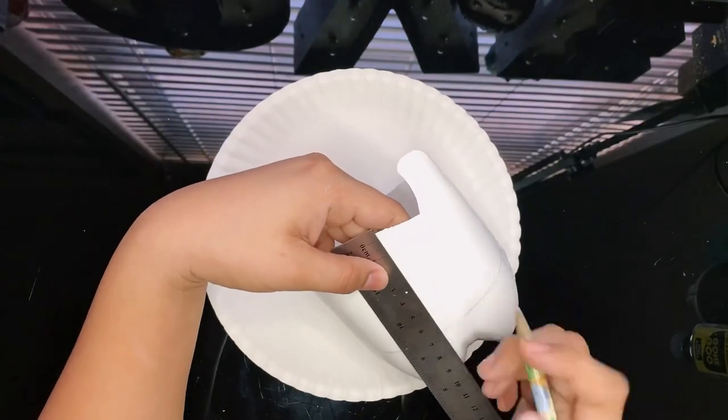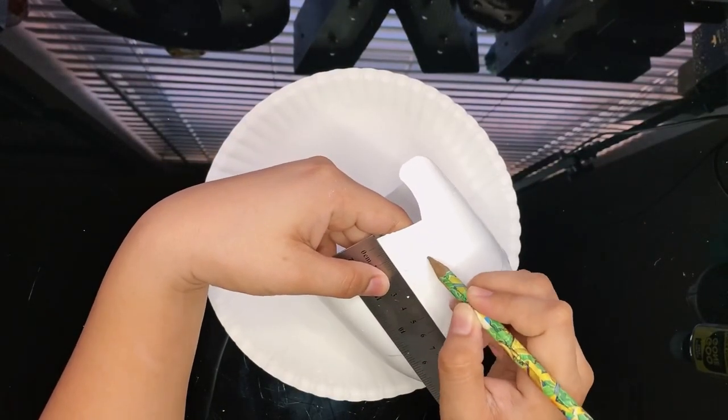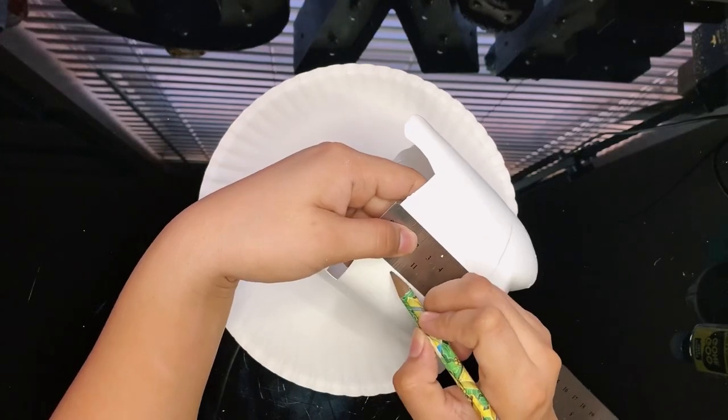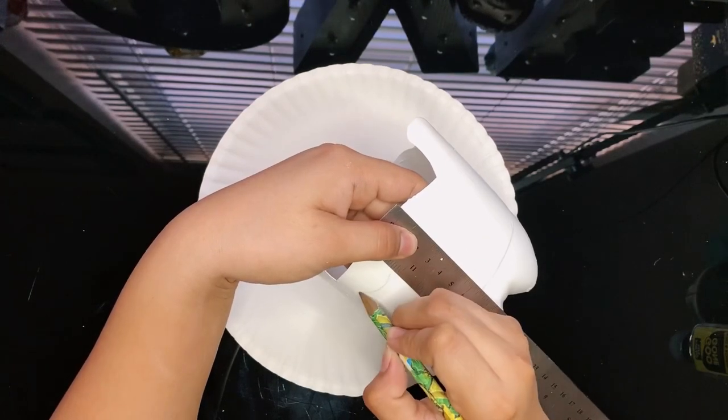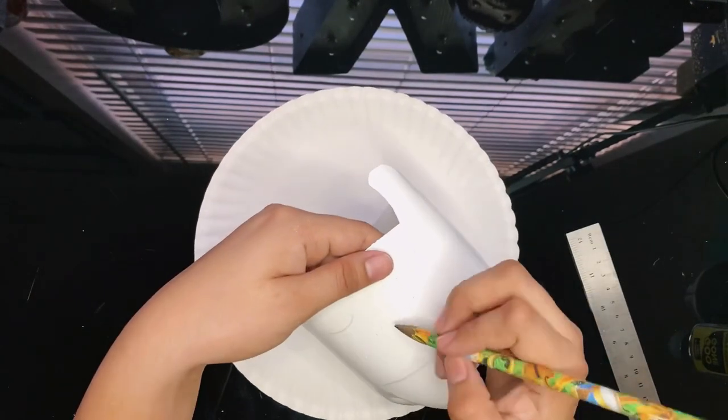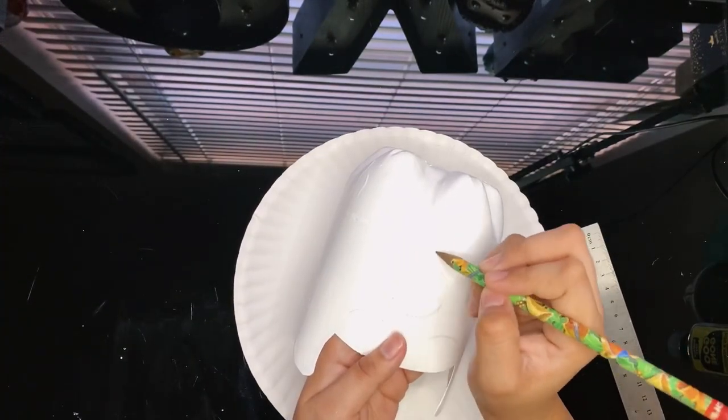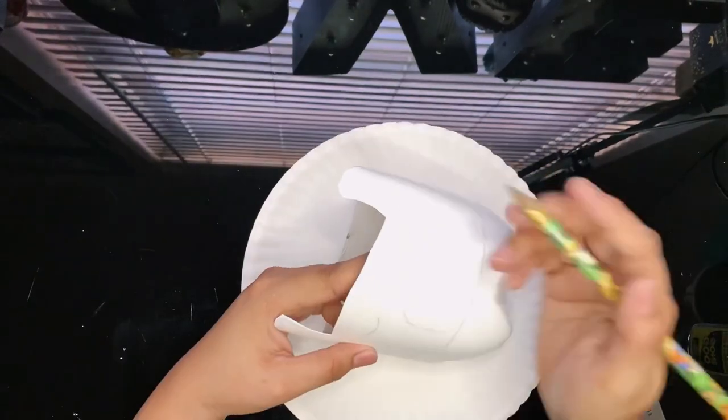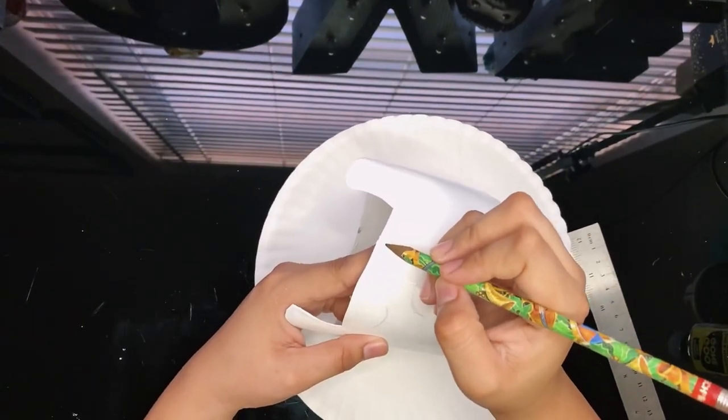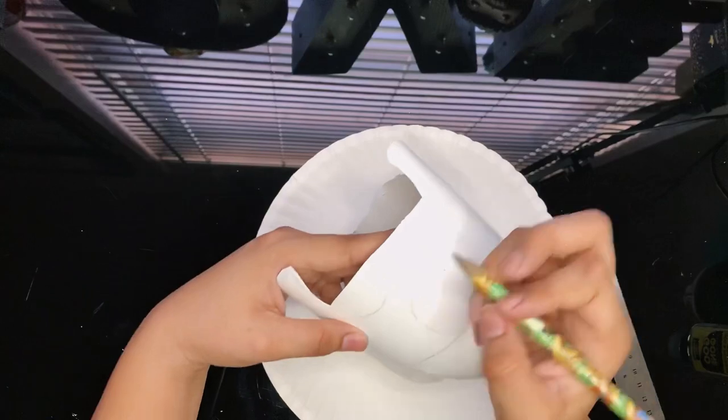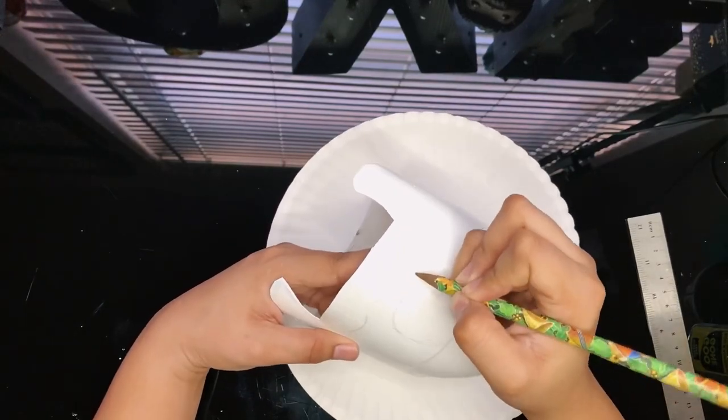Once your planter is dry, start drawing your llama with a pencil. If you mess up, a wet paper towel will erase. Here I'm starting with the eyes and I'm using a ruler to have an even space between them. Draw an oval for the nose. I will also be drawing some hair, eyelashes, and some rosy cheeks.